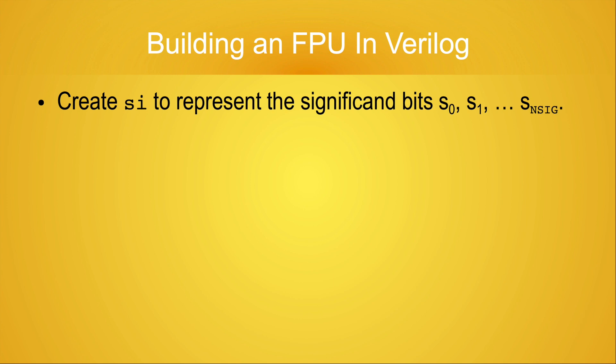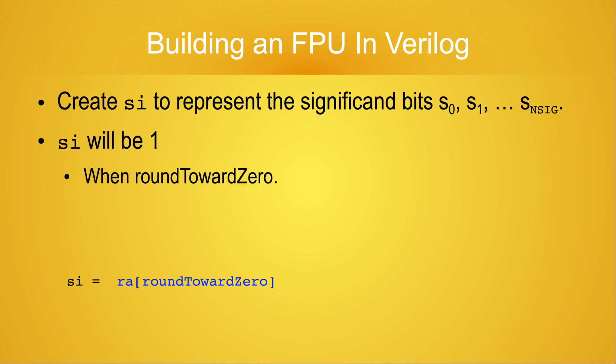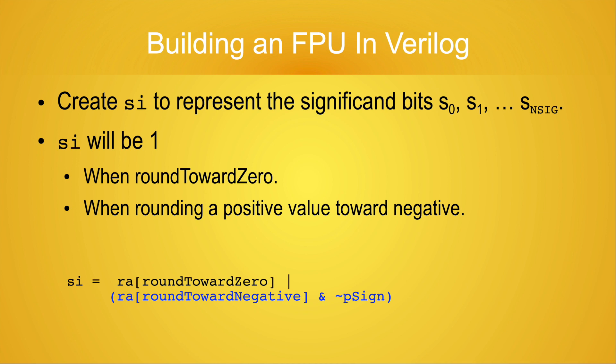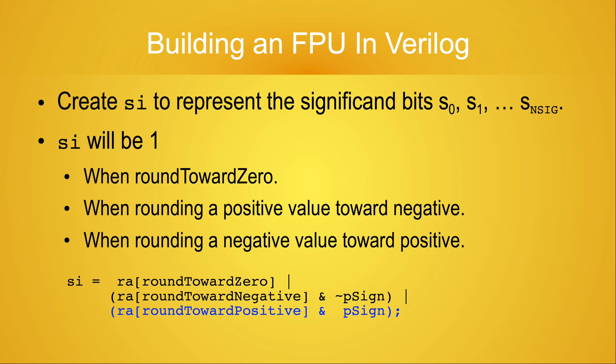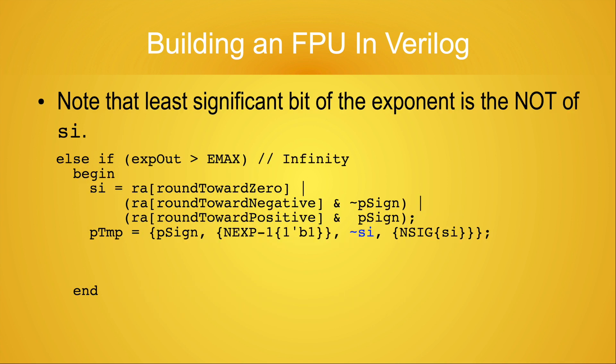I've created a 1-bit value SI, which is the value we're going to compute for the significand bits. When will SI be 1? If the rounding attribute is round towards 0, then the significand will be all 1s. Likewise, when the rounding attribute is round toward negative and we're rounding a positive result, we need to use the largest finite number, so again the significand must be all 1s. And finally, when the rounding attribute is round toward positive and the number being rounded is negative, we need the most negative finite number, which has a significand of all 1s. Back to the code — note that the least significant bit of the exponent is the NOT of SI.